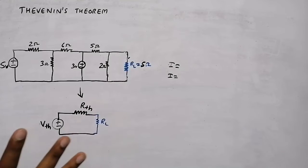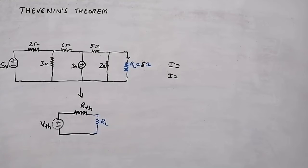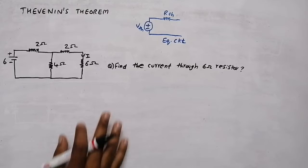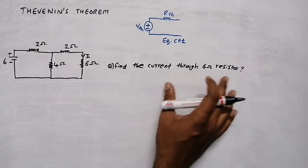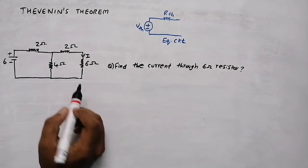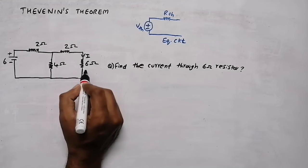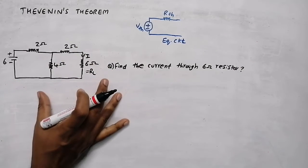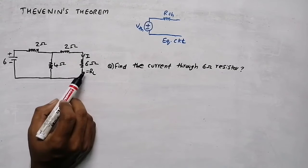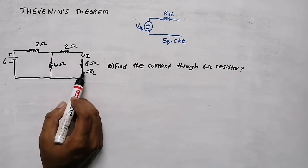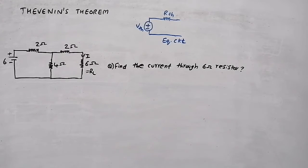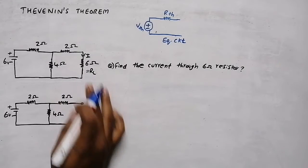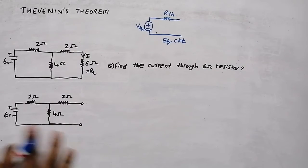Now I will show how to apply Thevenin's theorem by solving a problem. They are asking us to find the current through the 6 ohm resistor, which will be our load resistor. To do Thevenin's theorem, first identify the load resistor and remove it from the circuit. So we removed the load resistor, and this is the remaining circuit.